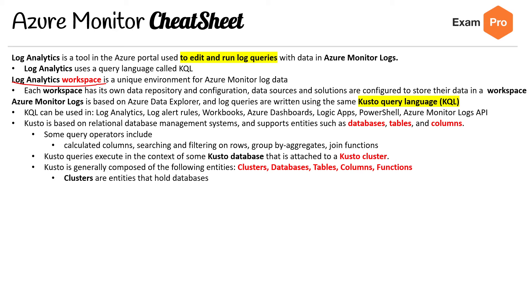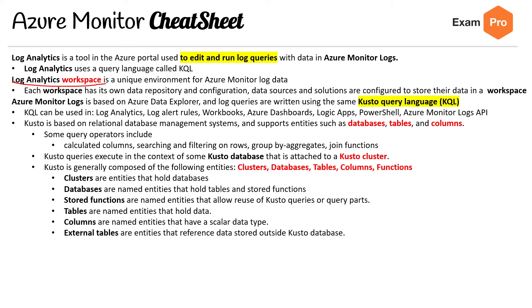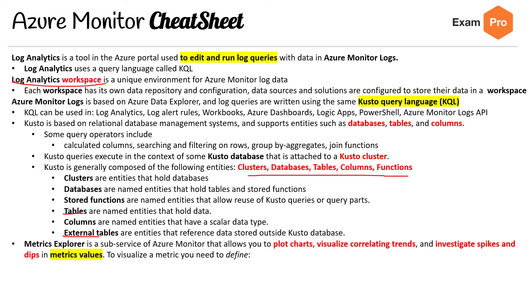Clusters are entities that hold databases. Databases are named entities that hold tables and stored functions. Stored functions are named entities that allow reuse of Kusto queries or query parts. Tables are named entities that hold data. Columns are named entities that hold scalar data types. External tables are entities that reference data stored outside the Kusto database — both count as tables. Generally, these concepts are fairly self-explanatory.